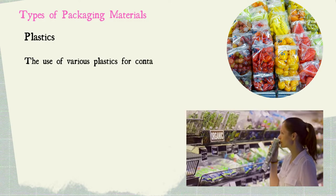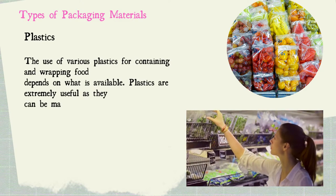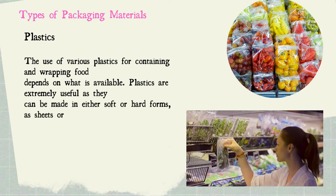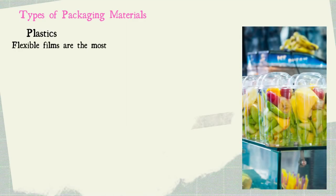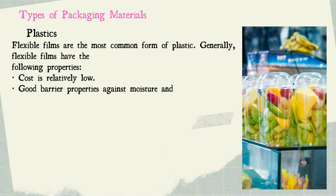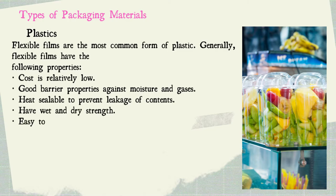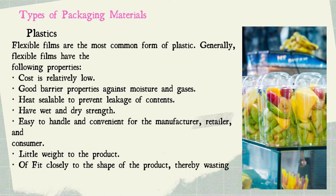Plastics. The use of various plastics for containing and wrapping food depends on what is available. Plastics are extremely useful as they can be made in either soft or hard forms, as sheets or containers, similar to glass containers. Flexible films are the most common form of plastic. Generally, flexible films have the following properties: relatively low cost; good barrier properties against moisture and gases; heat sealable to prevent leakage; wet and dry strength; easy to handle and convenient for the manufacturer, retailer, and consumer; little weight added to the product; and a close fit to the shape of the product, wasting little space during storage and distribution.